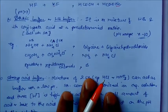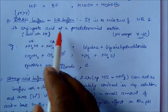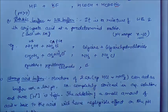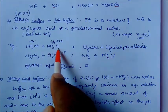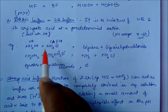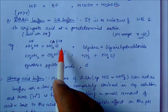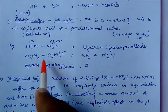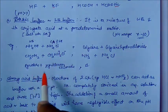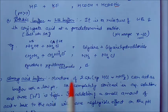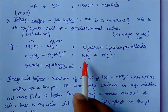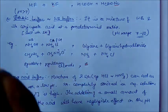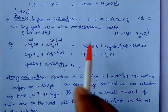In a basic buffer, it is a mixture of a weak base and its conjugate acid at a predetermined ratio. Examples include CH3NH2 with CH3NH3+, pyridine with pyridine chloride, glycine with hydrogen chloride, and NH3 with NH4Cl. The pH of a basic buffer is more than 7 — the range is approximately 7 to 10.